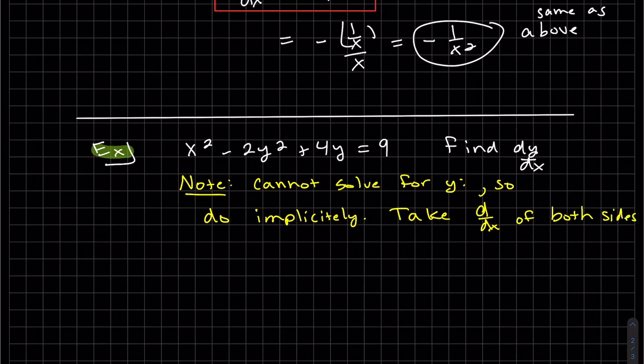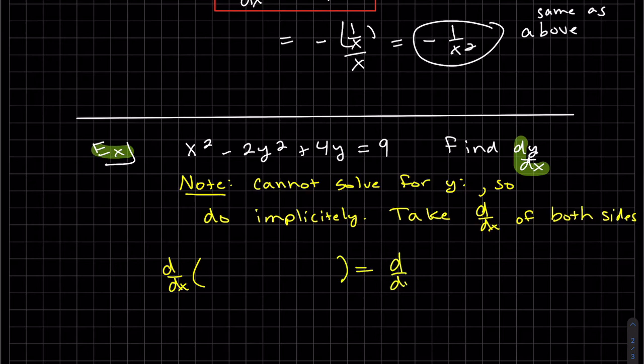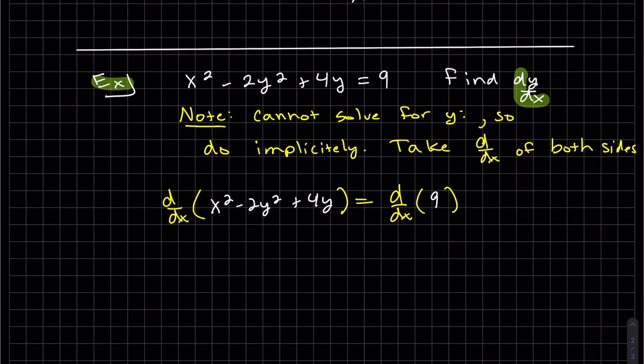Okay, let's do another one. Again, we want d/dx of both sides. So it's 2x, the derivative of this is minus 4y, but again we have to chain rule it since y is in terms of x, so it's dy/dx, 4 times dy/dx.